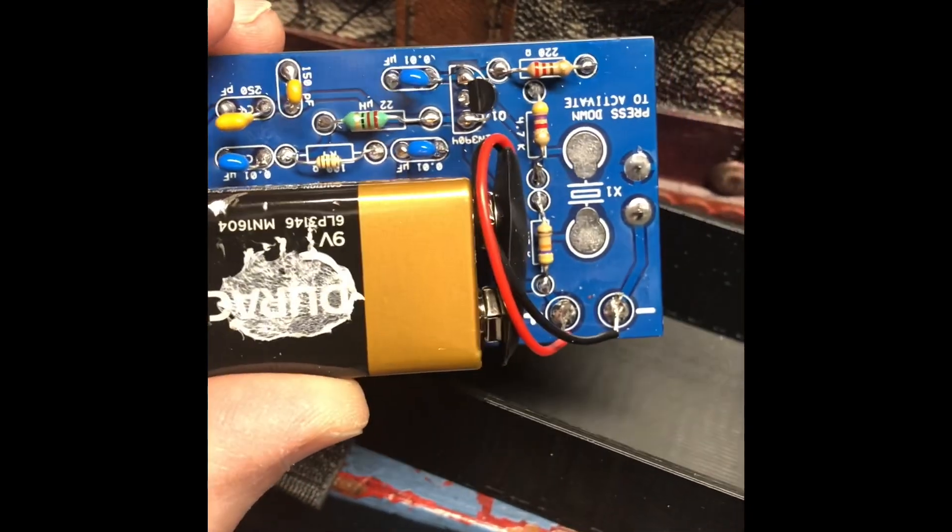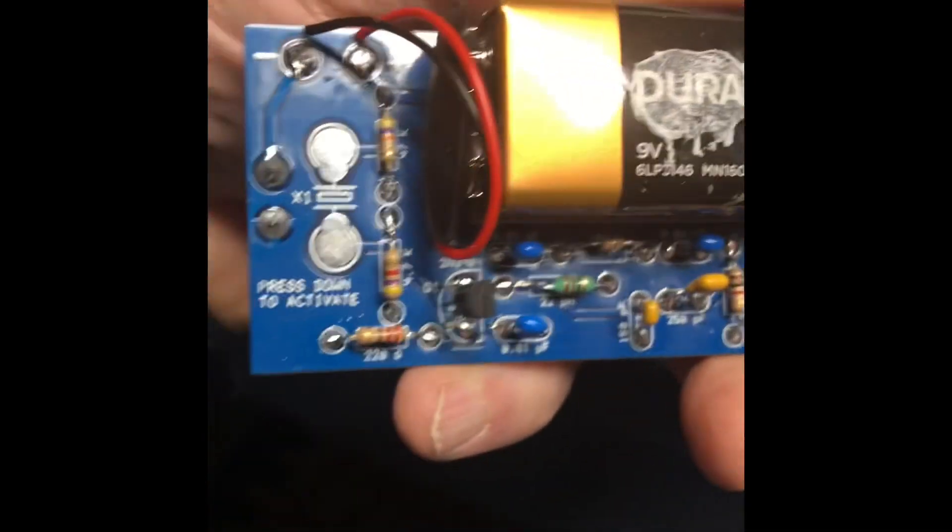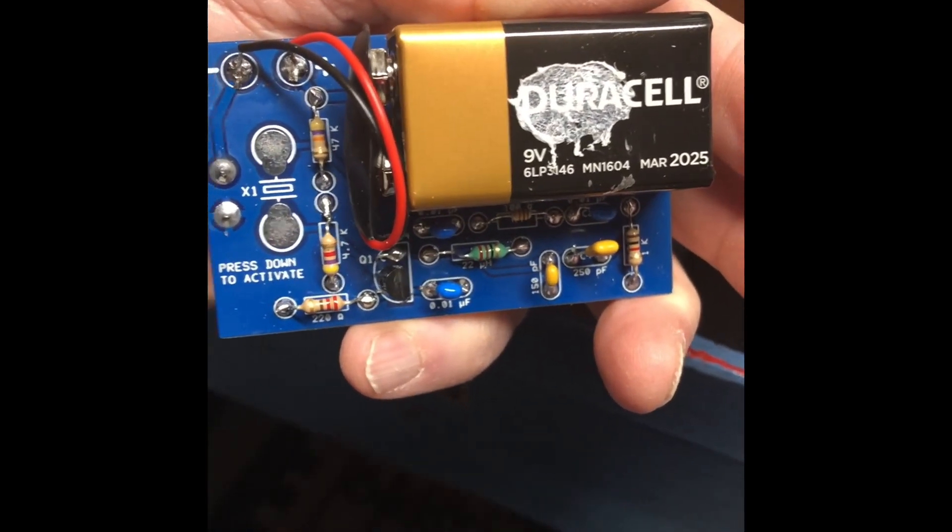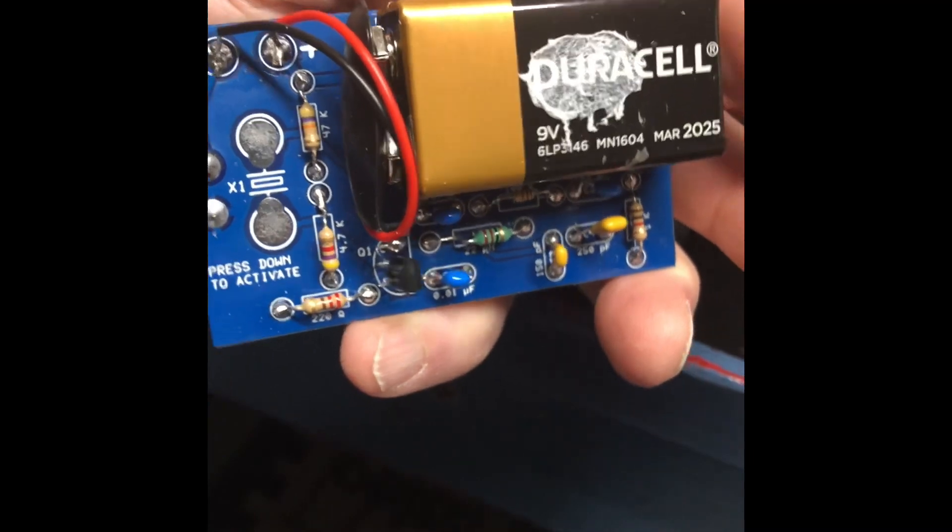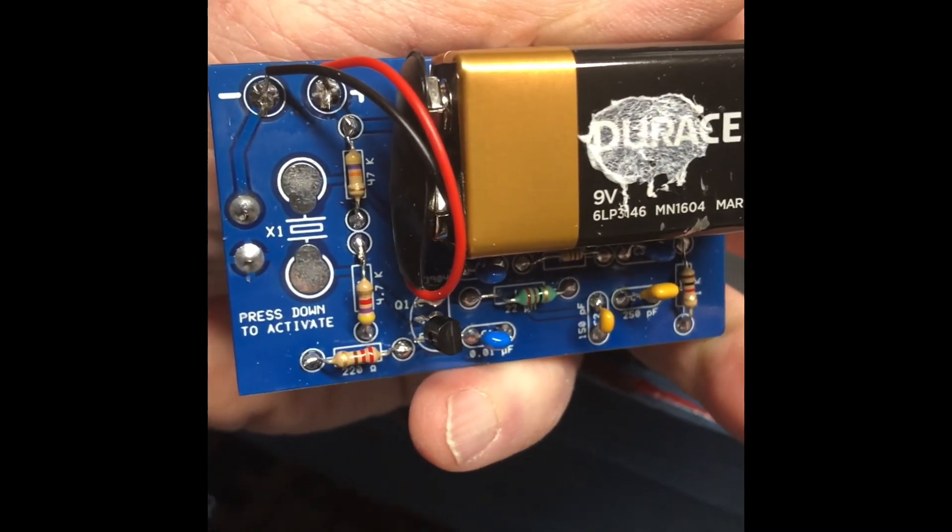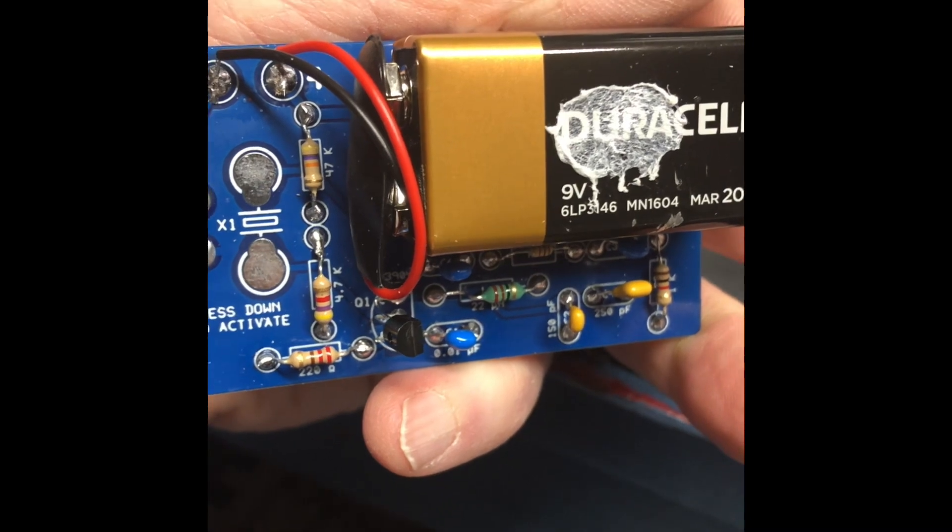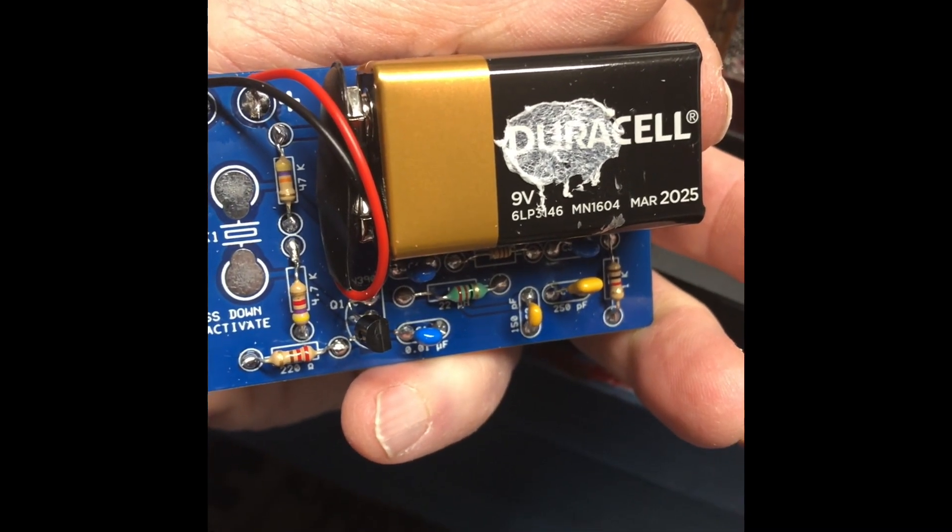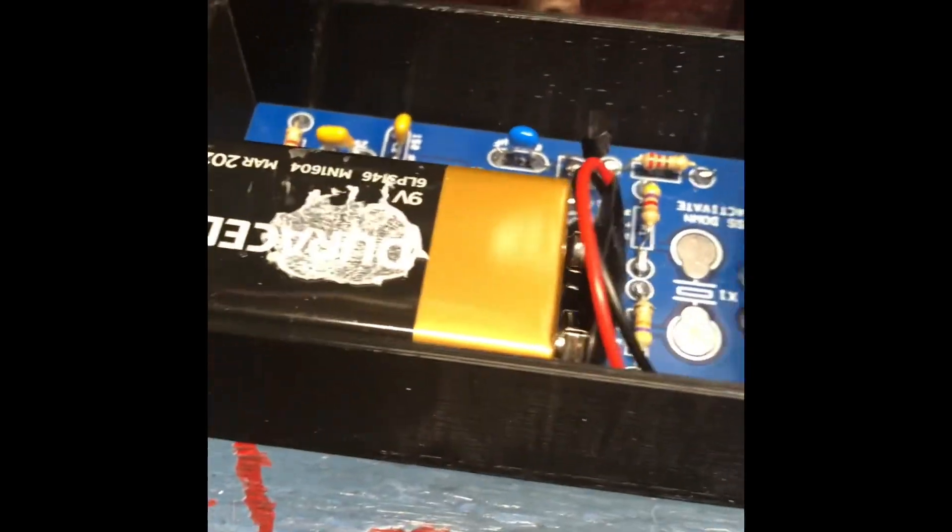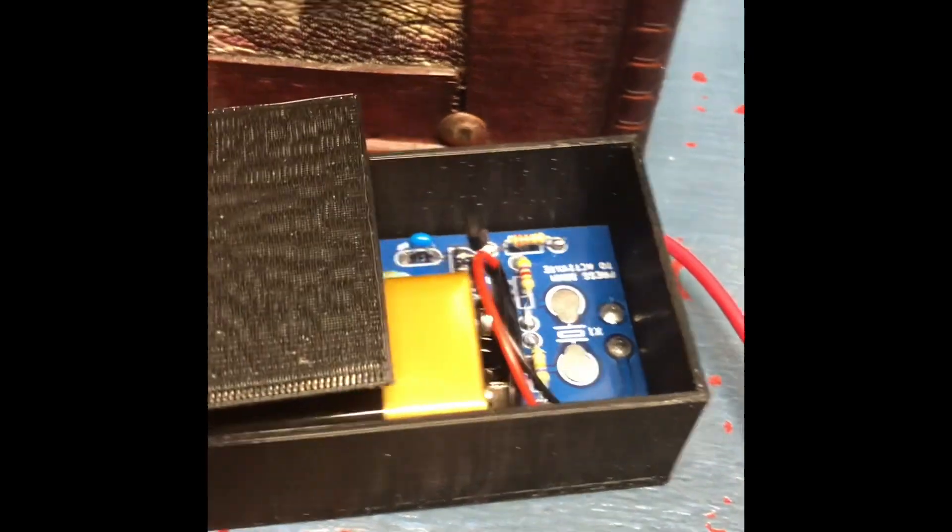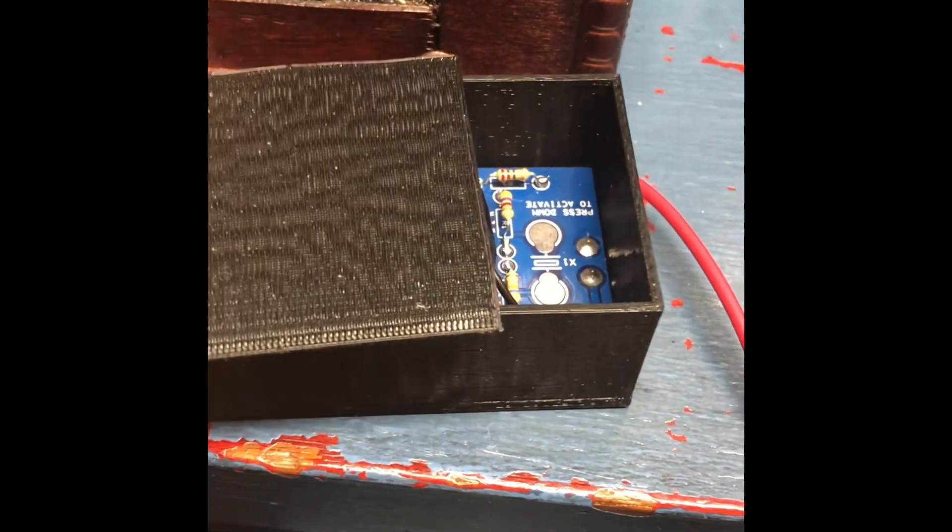This is the crystal spotter that was designed by the Four-State QRP Club and it has an on-off switch on the bottom so it's only on when you put the crystal on the two pads there. It comes with an STL file that you can bring to your library. My library has a 3D printer and you can make this box and this crystal spotter fits right in the box and it even has a sliding cover.